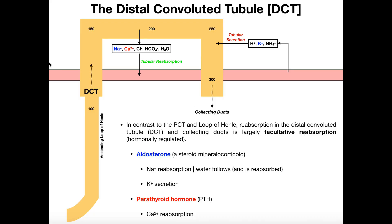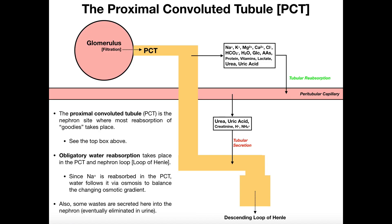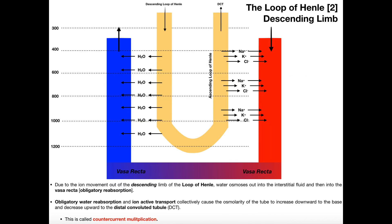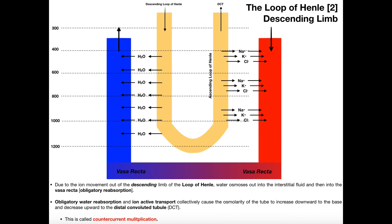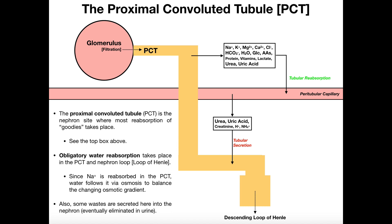In the previous videos we talked about filtration at the glomerulus, tubular reabsorption and tubular secretion in the proximal convoluted tubules and the loop of Henle. What we mentioned in particular about the proximal convoluted tubule and the loop of Henle is that we have what's called obligatory water reabsorption.